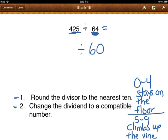Now I have to change this number. Look at number 2. Change the dividend to a compatible number. This word compatible, do you know what that means? A compatible number is a number that works. It goes together. We have to think about what number can 60 go into, and it has to be close to 425. So what I like to do is make a list of multiples.